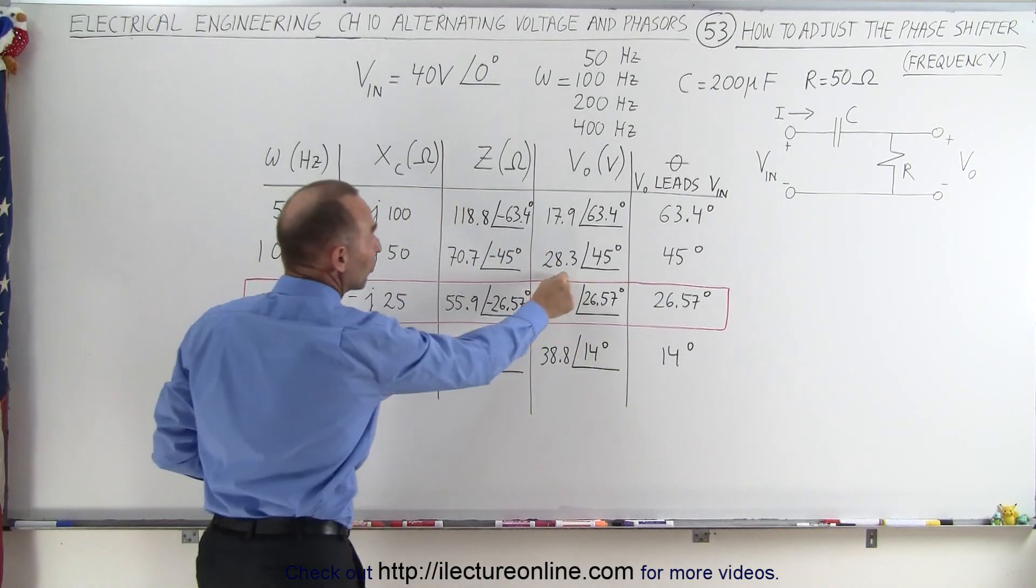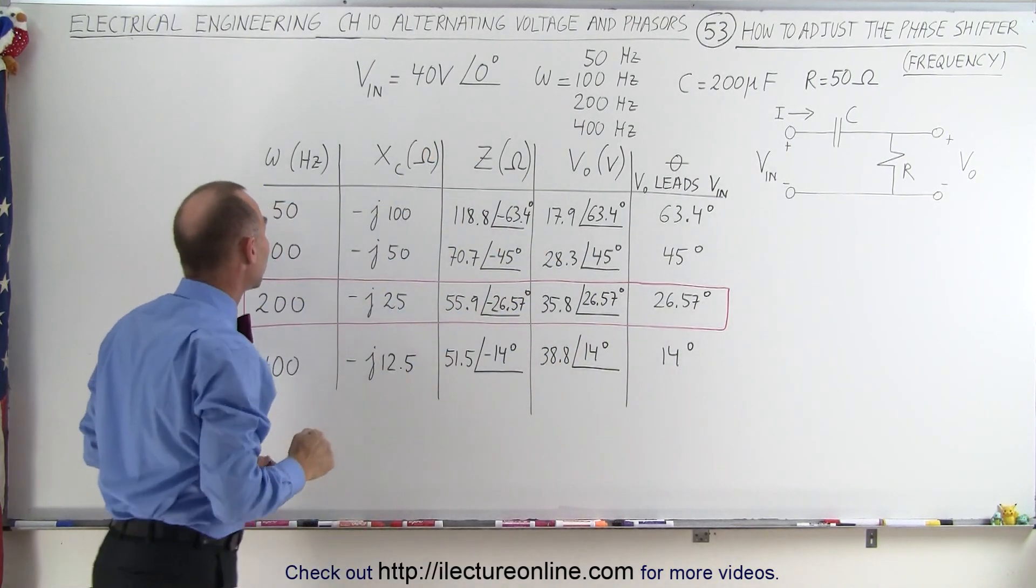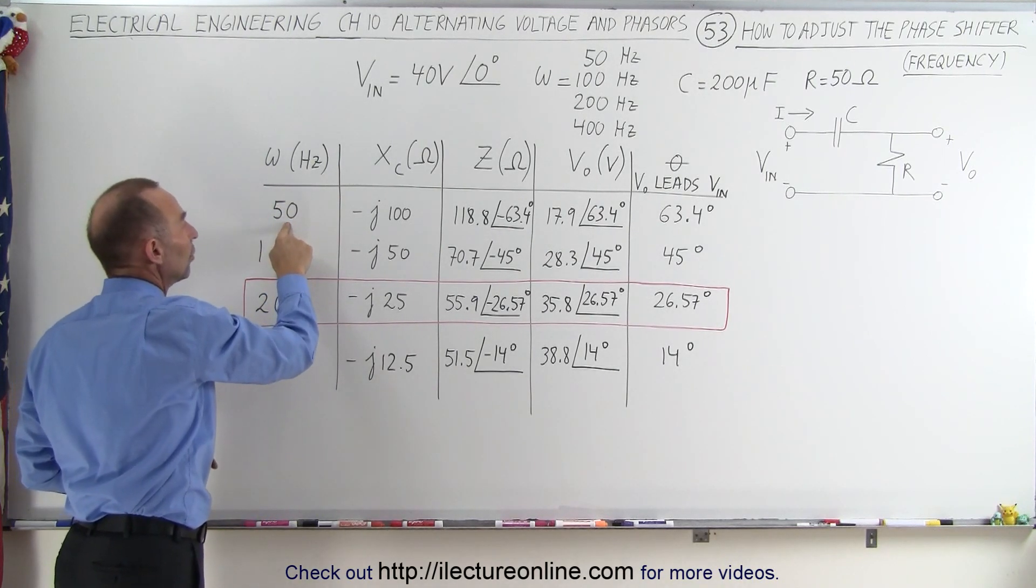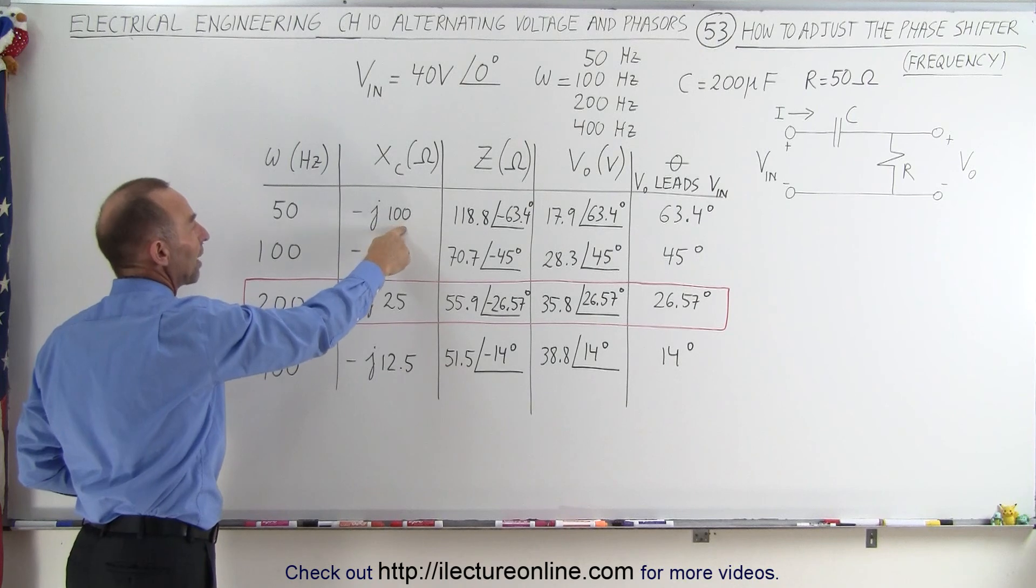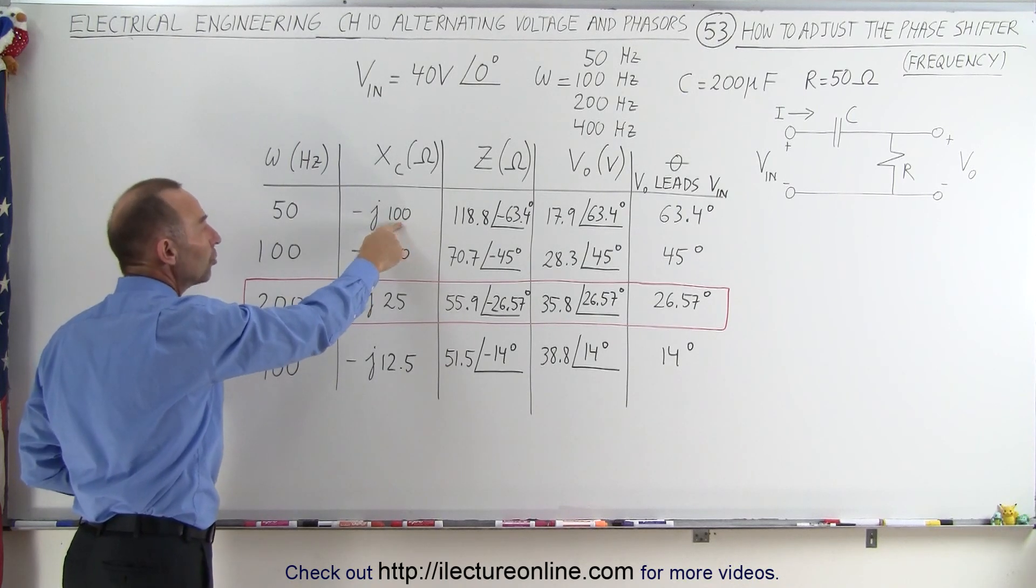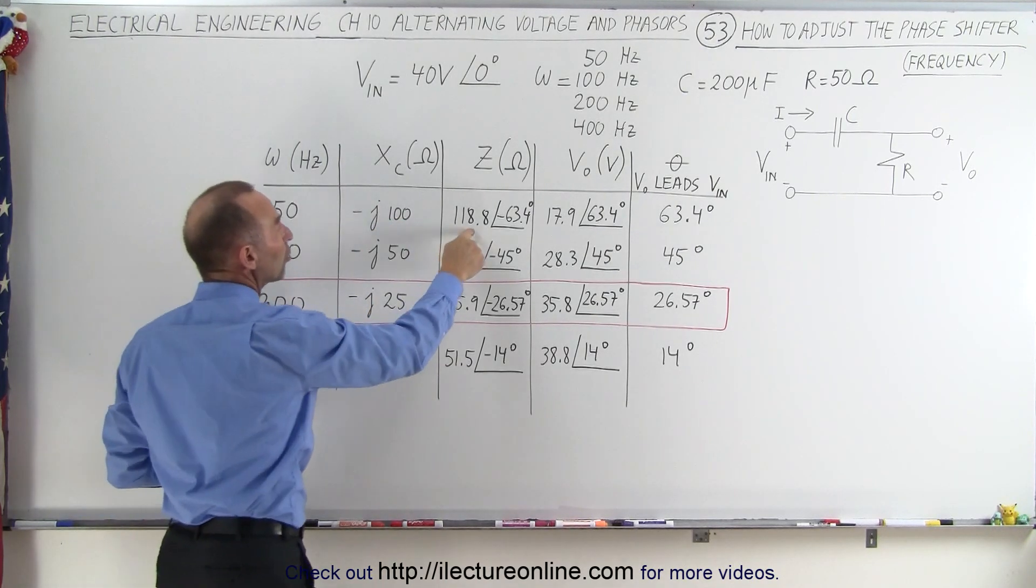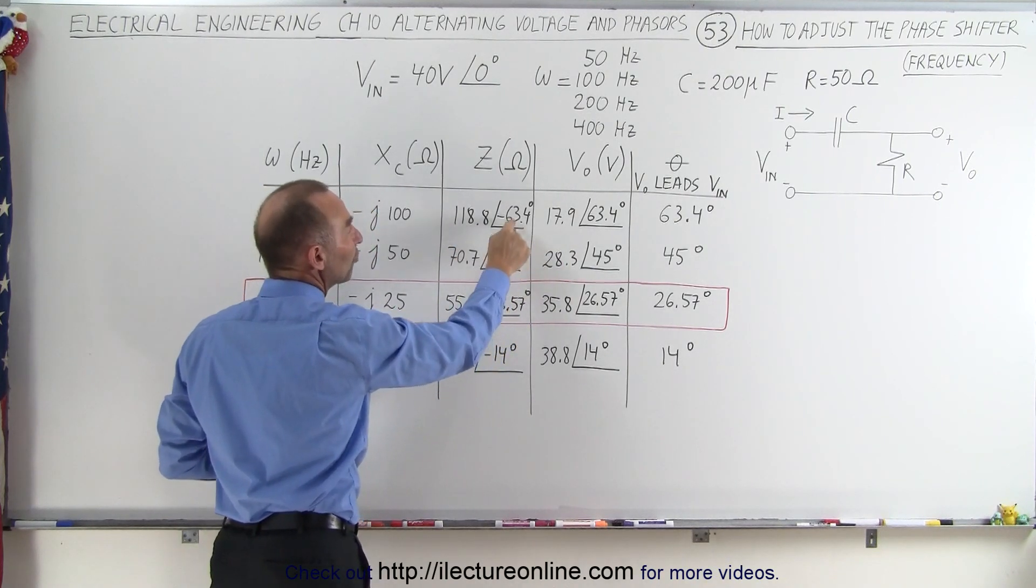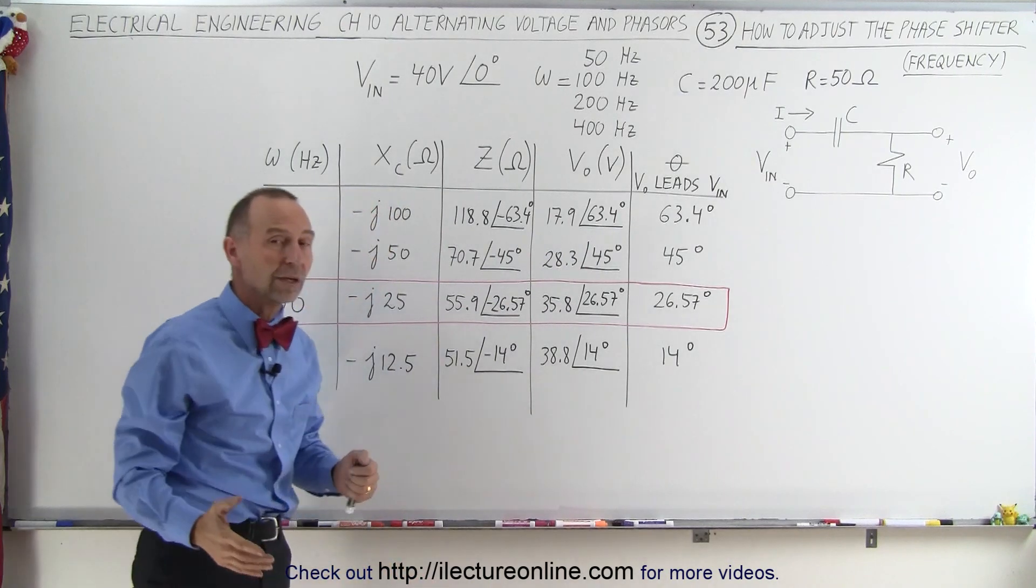If we now make the frequency even smaller, we go down to 50 Hz, notice now again we double the capacitor reactance to 100 ohms. That gives us a larger impedance, which means a smaller output voltage, but a much greater phase shift. Now we have a phase shift of 63.4 degrees.